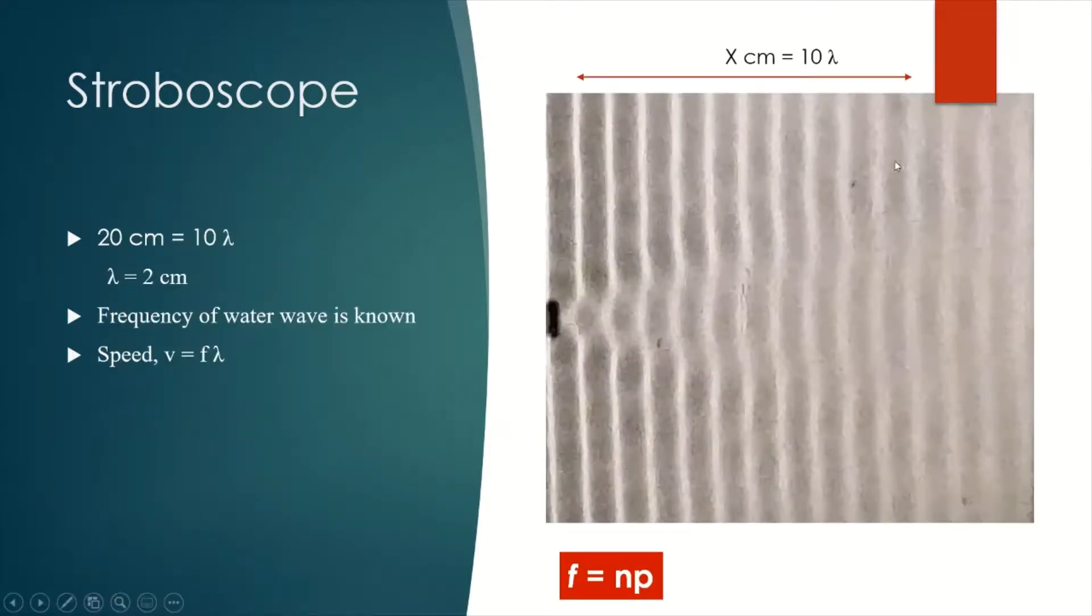This picture shows us a water wave that has been frozen. If we measure this distance and name it as X cm, in this X cm there are 10 lambda. Why is it 10 lambda? Can you recall what is lambda? Lambda is the distance between crest and the next crest.